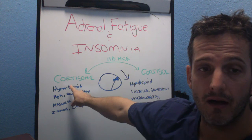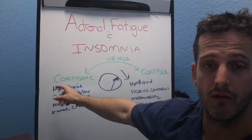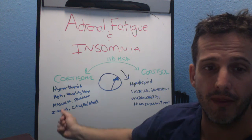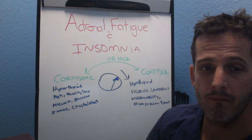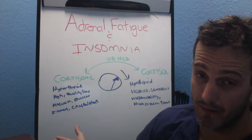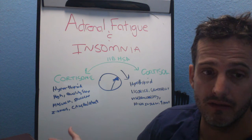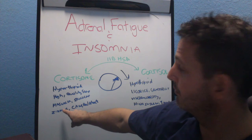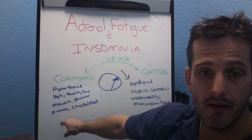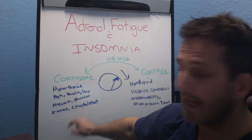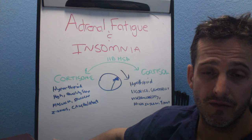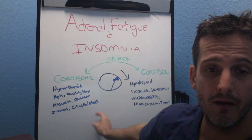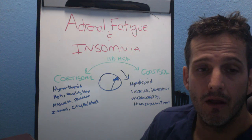Things that cause cortisone to be upregulated versus cortisol include hyperthyroidism and quality sleep. And here are some great products: Magnolia, Skullcap, Zysphus, and a fourth one called Citrus Peel Extract.